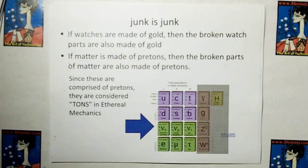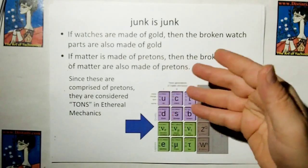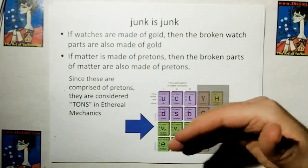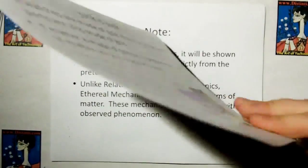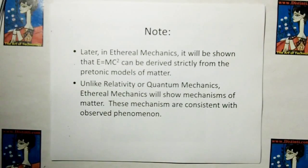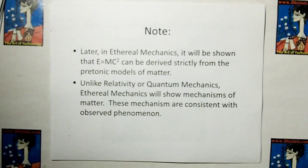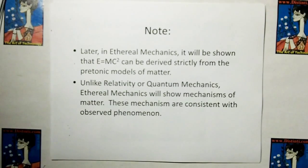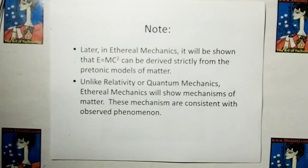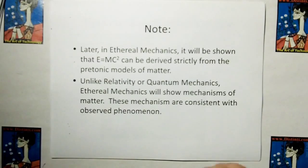If watches are made of gold, then broken watch parts are also made of gold. If matter is made of pretons, then broken parts of matter are also made of pretons. And since these are comprised of pretons, they're called tons in ethereal mechanics. Later in ethereal mechanics, it'll be shown that E equals MC squared can be derived strictly from the pretonic models of matter. Unlike relativity or quantum mechanics, the ethereal mechanics will show mechanisms of matter, and these mechanisms are consistent with observed phenomena.